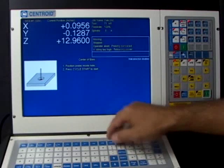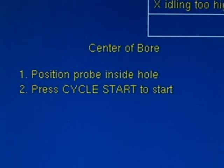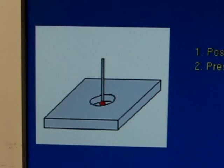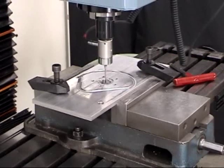We're going to probe the bore, so I'm going to hit F1 and follow the instructions. All I need to do is position the probe tip within the bore just like the instructions say and press cycle start.